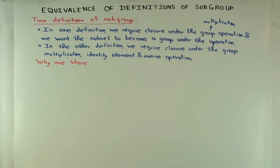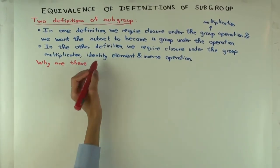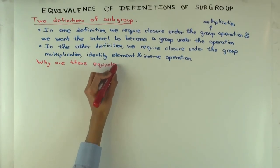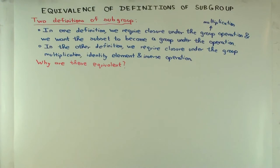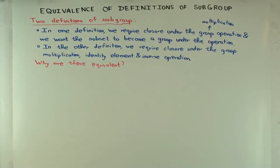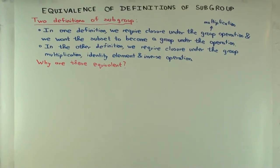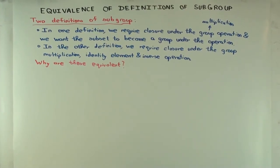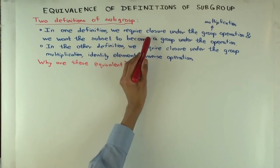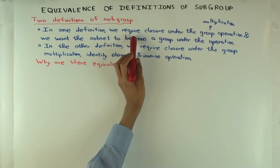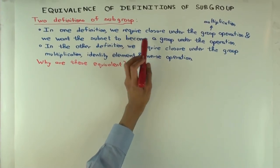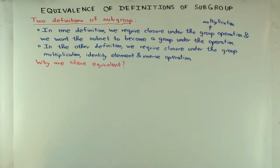So why are these equivalent, and first of all, why are they not obviously equivalent? What's the thing that's different between the definitions? We didn't mention the identity element and inverses. So in the first case, it's possible a priori that the identity element and inverse operation of the subgroup need not be the same as that from the whole group — that's something we have to worry about.